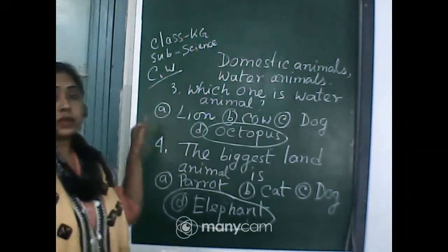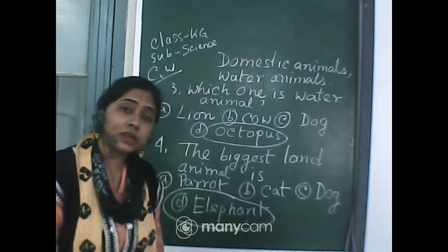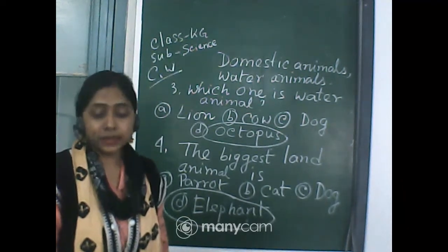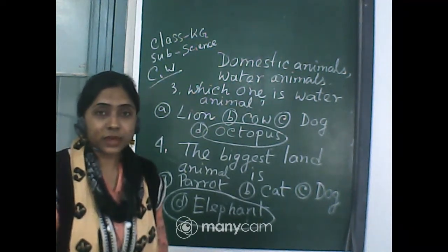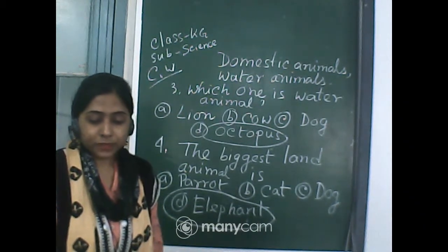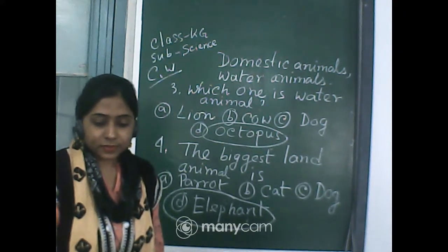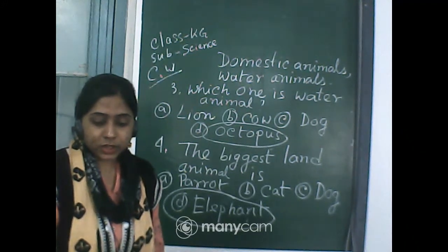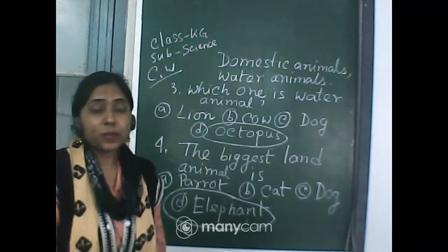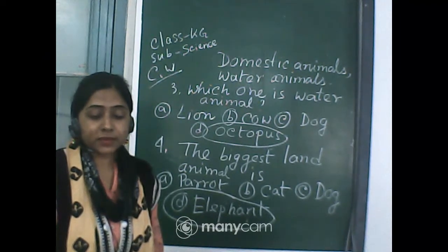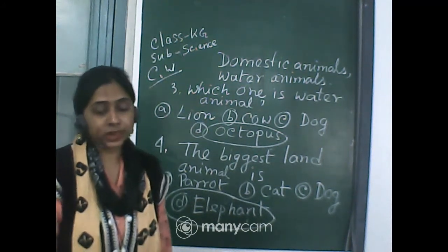Now, elephant is the biggest land animal. But what is the biggest animal in the whole world? Very good — Oshmita and Oshariya got it right: the blue whale! Blue whale is the biggest animal in the world.